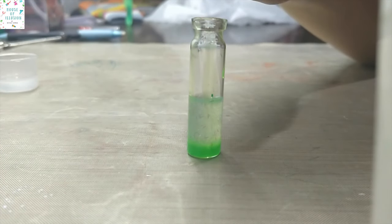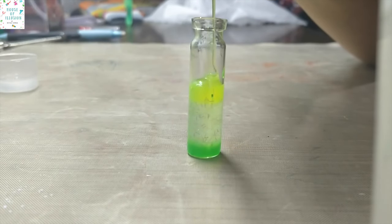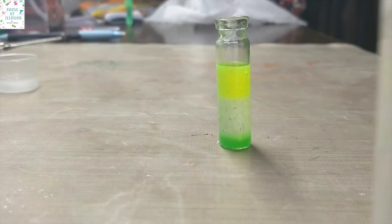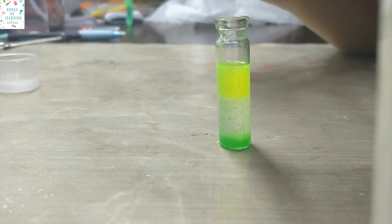Similarly, I have laid the other vial with the green pigment at the bottom, glitter layer in the middle, and neon yellow layer at the top, and let it set completely.